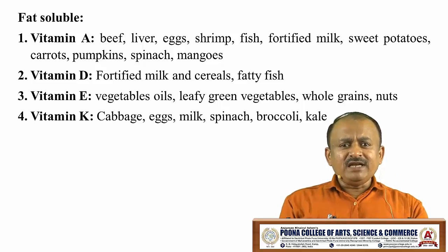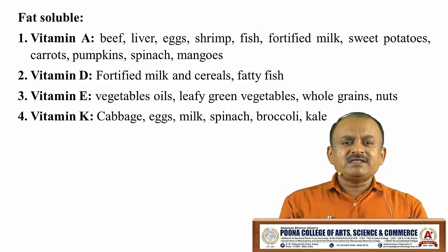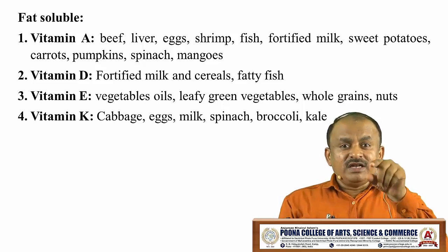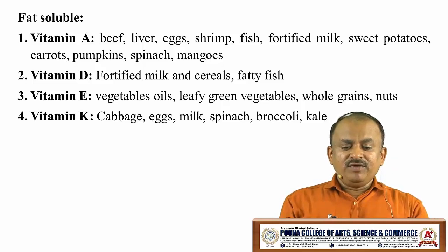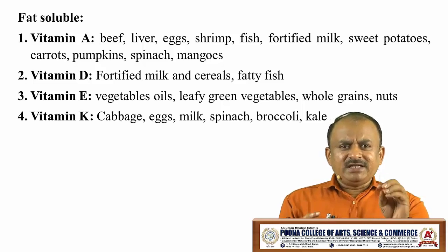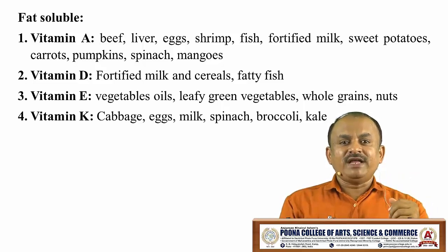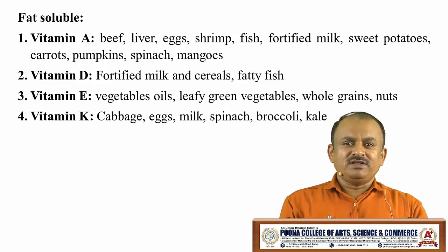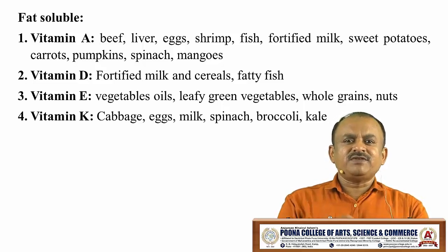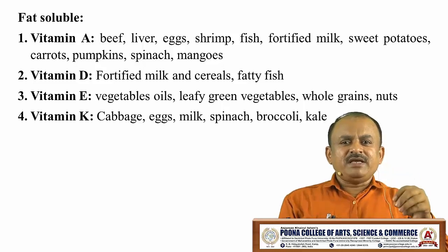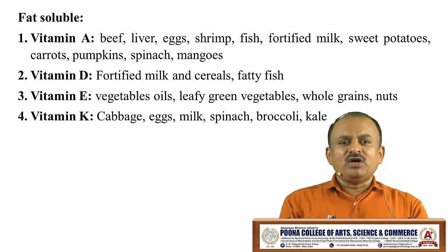Vitamin E can be obtained from various types of vegetable oils, leafy green vegetables, whole grains and nuts. In addition to these, there are certain vegetables and herbs — for example, aloe vera — from which we also get a large quantity of vitamin E. For vitamin K, the sources include cabbage, eggs, milk, spinach and broccoli.